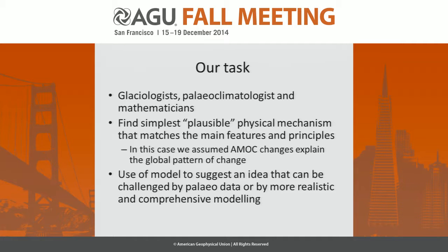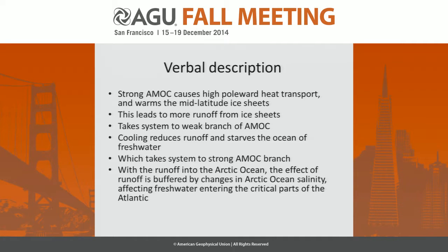A verbal description of the model: strong AMOC causes high poleward heat transport, warms the mid-latitude ice sheets, leading to more runoff. This is a traditional idea that would take the system to the weak branch of AMOC because the runoff is freshwater. The cooling then reduces runoff and starves the ocean of freshwater, taking you back to the strong branch.